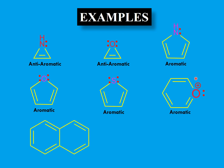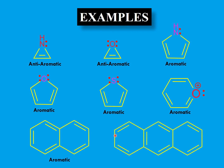Aromaticity can also occur in bicyclic or tricyclic molecules. If the required number of electrons is present in the rings and involved in conjugation, and the rings are planar, the molecule is aromatic. These examples illustrate how to differentiate aromatic, anti-aromatic, and non-aromatic molecules by examining the number of electrons in conjugation, planarity, and conjugation itself. Thank you for watching.